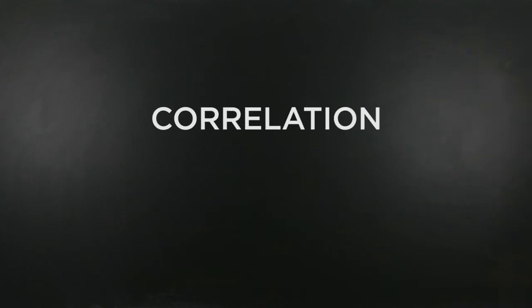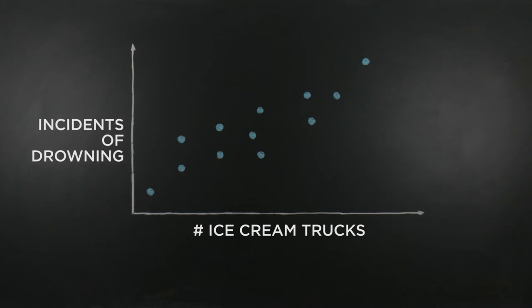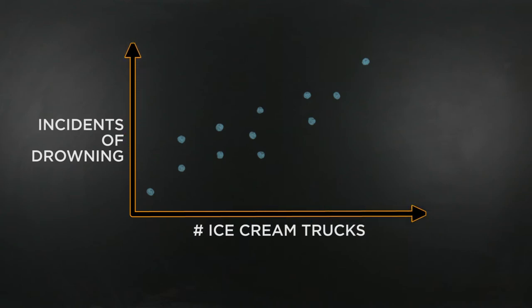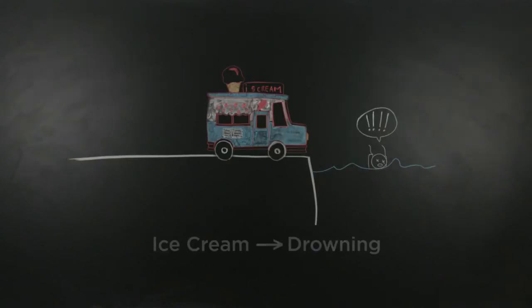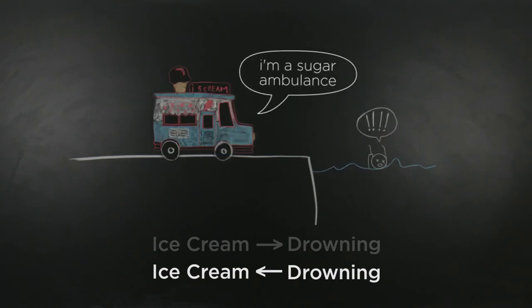Finally, correlation does not entail causation. Let's say we have a graph like this, which shows a positive correlation between the number of ice cream trucks versus the incidence of drowning. Since as the number of ice cream trucks increases, more people drown, we might be tempted to conclude that in this unfortunate town, ice cream trucks are pushing people into the water. Or we might claim that when someone drowns, it summons an ice cream truck.